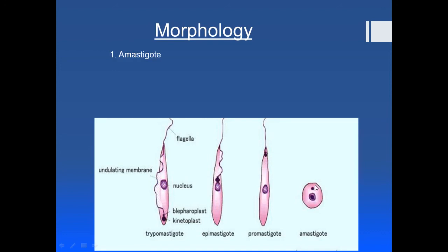To summarize the four forms: the amastigote is circular/oval with anterior kinetoplast and no flagellum; the promastigote has anterior kinetoplast with a flagellum but no undulating membrane; the epimastigote has kinetoplast near the nucleus with a short undulating membrane; and the trypomastigote has a posterior kinetoplast with a long undulating membrane.